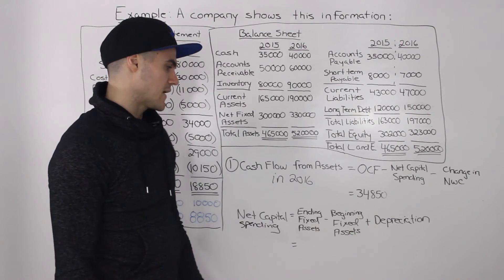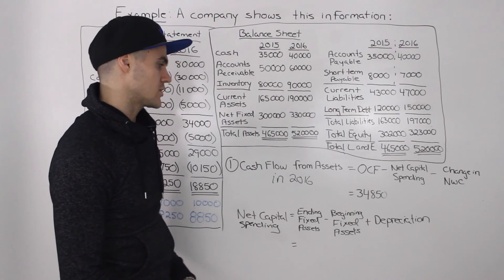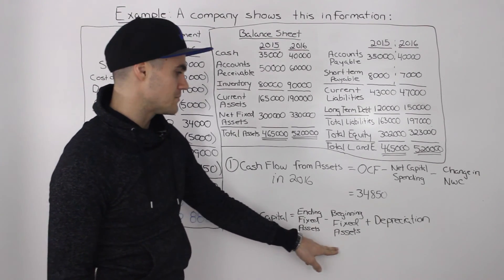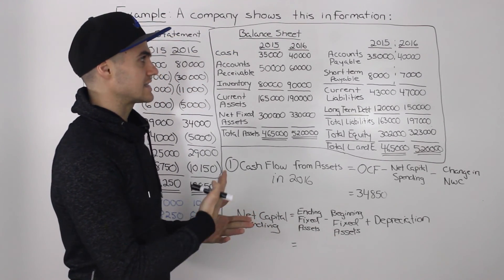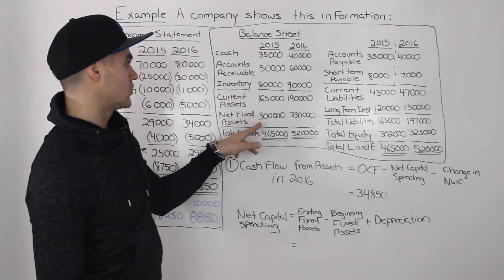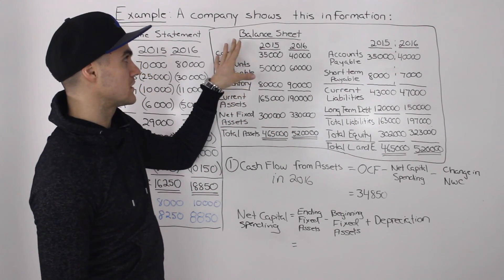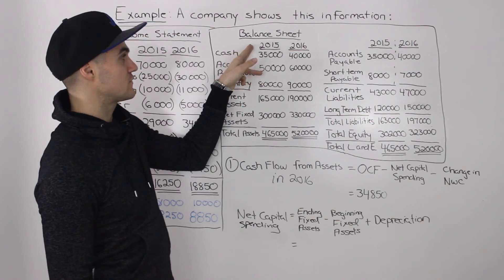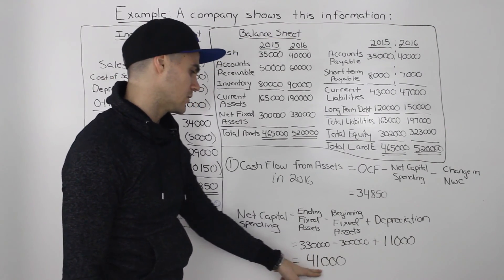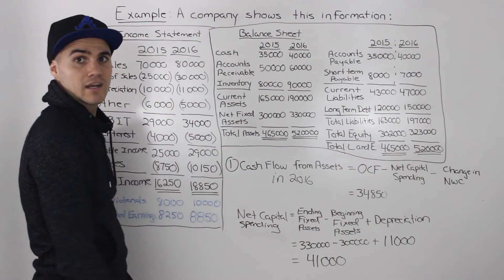Next, we figure out net capital spending, which equals ending fixed assets minus beginning fixed assets plus depreciation. Since we're finding this for 2016, we assume beginning fixed assets in 2016 are the same as ending fixed assets of 2015. So beginning fixed assets is $300,000 and ending fixed assets is $330,000 — assuming these balance sheets are dated December 31st, 2015 and December 31st, 2016. Plugging in those numbers, including depreciation from the 2016 income statement, we get a final net capital spending amount of $41,000.